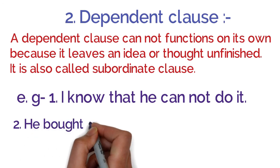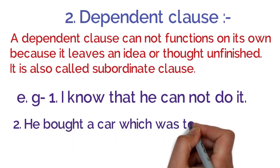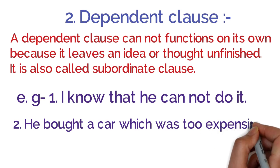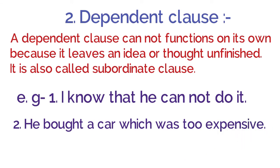Next example: 'He brought a car which was too expensive' — usne ek car kharidi jo bahut mehngi thi. Is sentence mein bhi do clauses hain. 'He brought a car' ek independent clause hai jo complete sense rakhta hai. 'Which was too expensive' yeh dependent clause hai, aur is dependent clause ko complete karne ke liye 'he brought a car' is sentence ko add kiya gaya, tab jaake ek complete sentence banaya gaya.